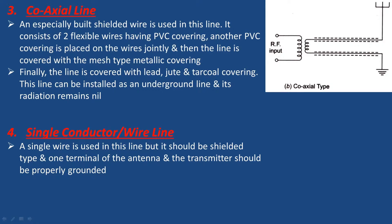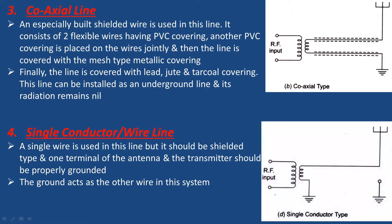One terminal of the antenna and the transmitter should be properly grounded. The ground acts as the other wire in this system. The antenna is connected to the single conductor line, and the same antenna is also connected to ground. So these are the transmission lines.